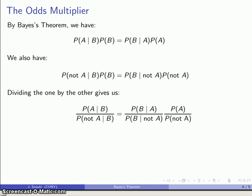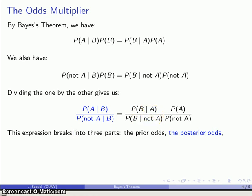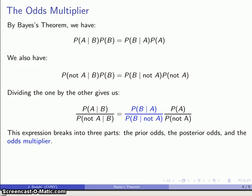This rather daunting expression actually breaks down cleanly into three components. The fraction representing probability of A over probability of not A is just the prior odds. The fraction representing probability of A given B over probability of not A given B is just the posterior odds. And then we have this remaining expression — probability of B given A over probability of B given not A. This is not an odds itself, but because it multiplies the prior odds to obtain the posterior odds, we refer to this quantity as the odds multiplier.